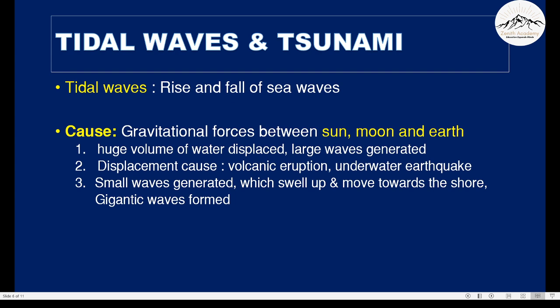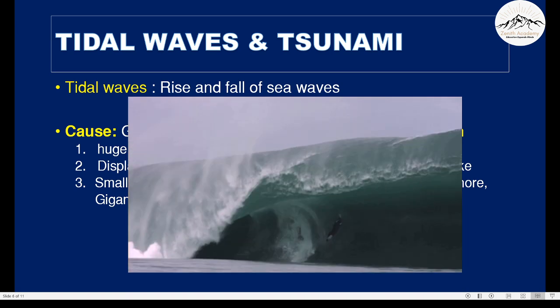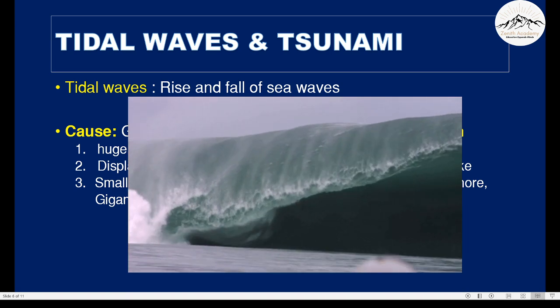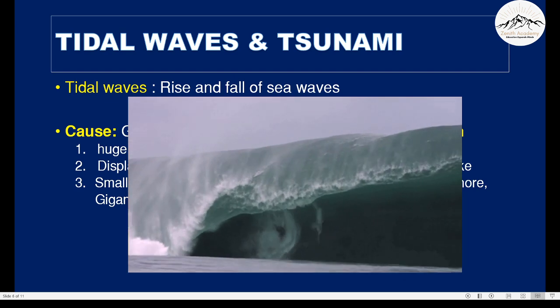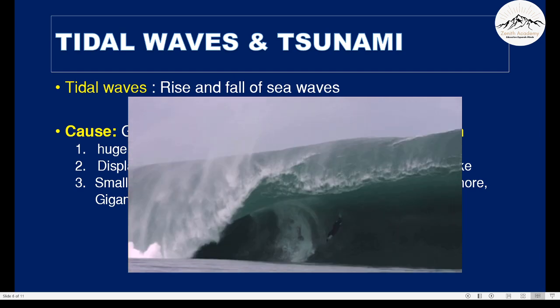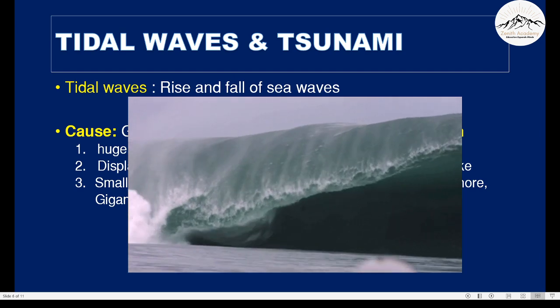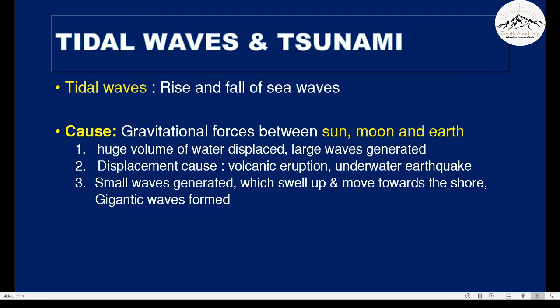The next natural disaster is tidal waves and tsunami. Tidal waves are the rise and fall of sea waves. We all love sea waves but only to a certain amount. If the waves get too high or too low, it is not safe anymore for us. Let's see what causes this — gravitational forces between the sun, moon and earth.